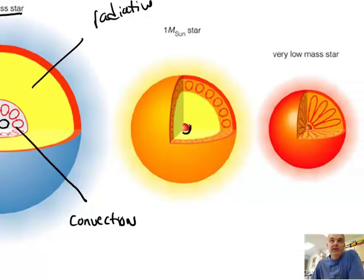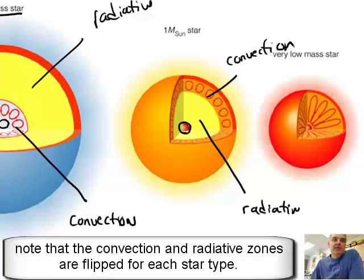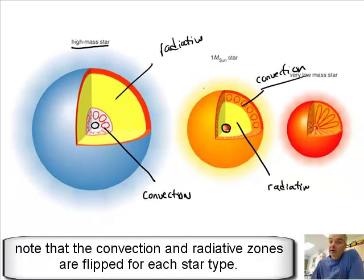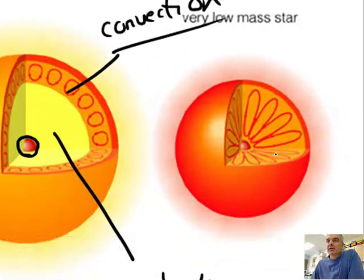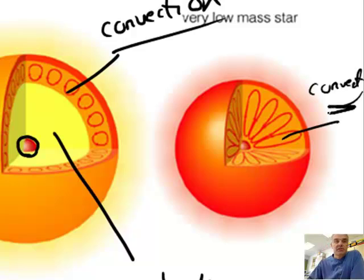For our Sun, we have the core right here. That's the radiative zone. And then we have the convection zone. You see how they're reversed because of the mass of the star. So in a high-mass star, the radiative and the convection zone are flipped. In a very low-mass star, you don't have a radiative zone. You just have convection only. There's not too many stars that fit this category.